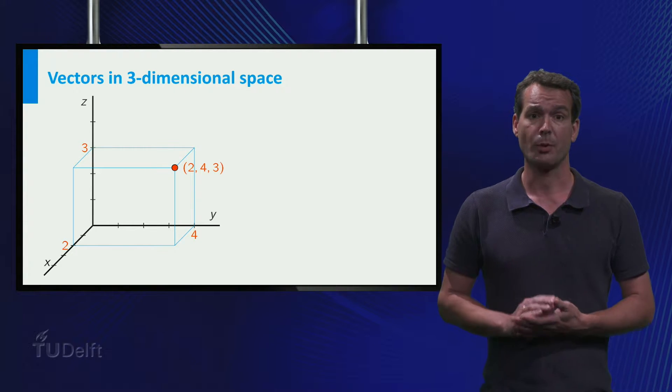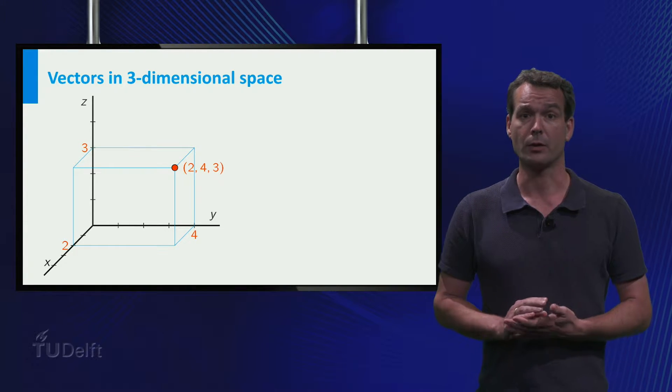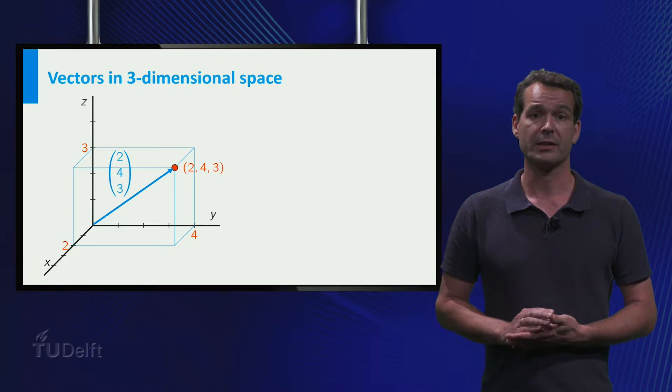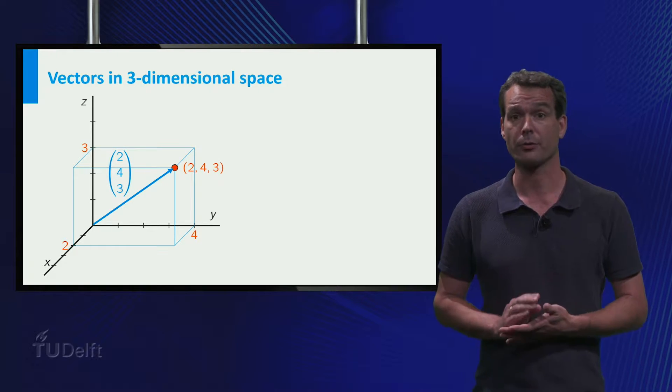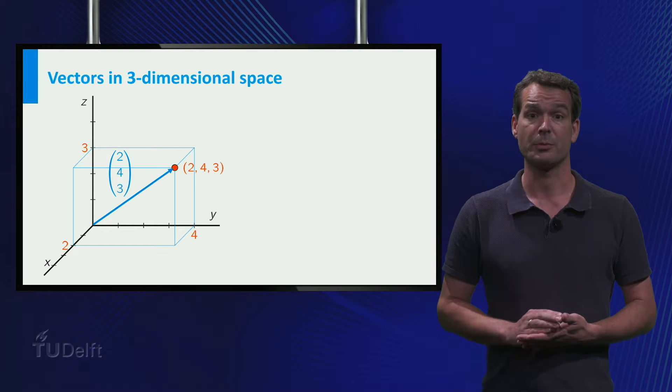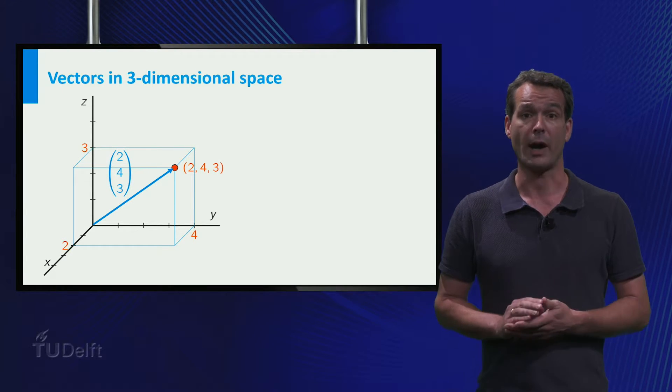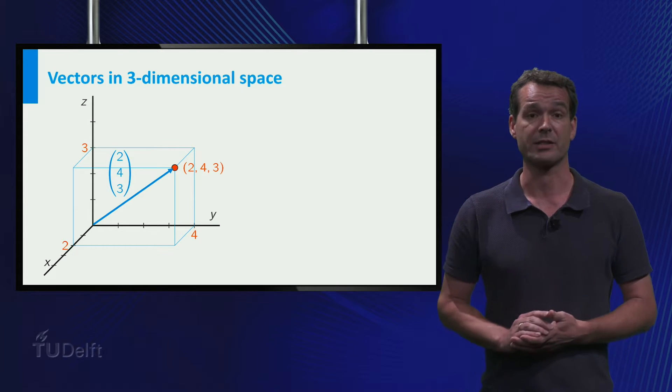In the picture you see the point in orange. The vector from the origin to this point is the vector which moves two in the x-direction, four in the y-direction and three in the z-direction.